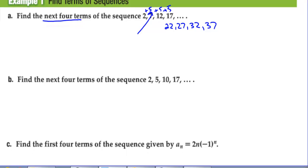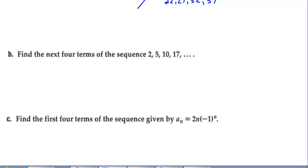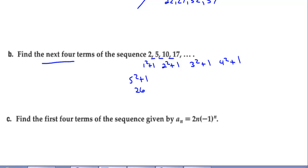Letter B: find the next four terms of the sequence. We just have to find a pattern. Here we're adding 3, adding 5, adding 7 — and we can keep going. But there's another pattern: 2 = 1² + 1, 5 = 2² + 1, 10 = 3² + 1, 17 = 4² + 1. So the next four terms are 5² + 1 = 26, 6² + 1 = 37, 7² + 1 = 50, and 8² + 1 = 65.